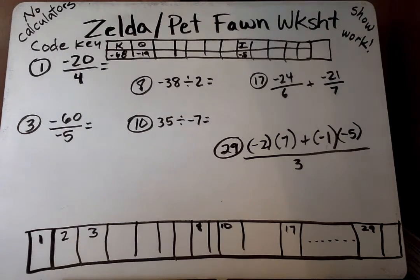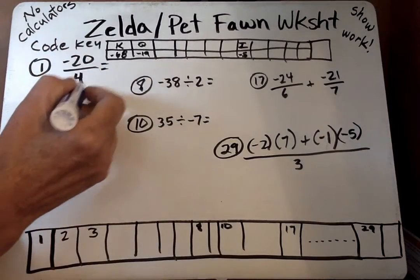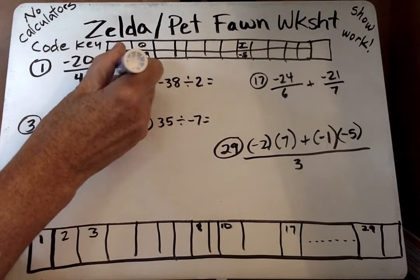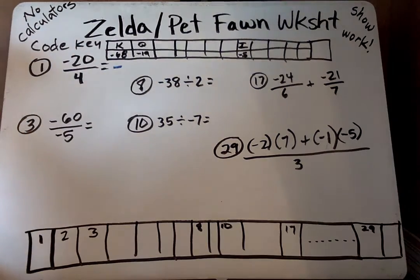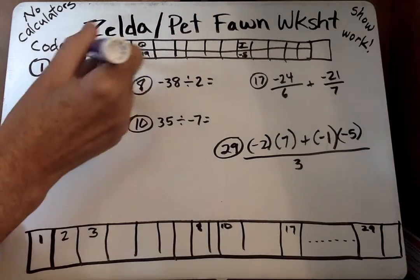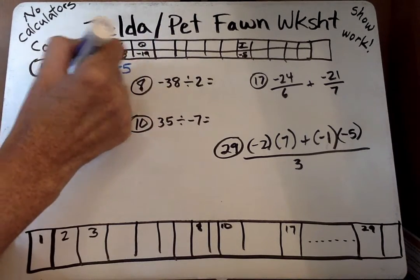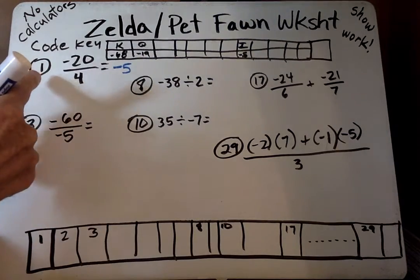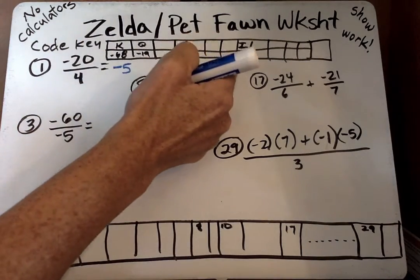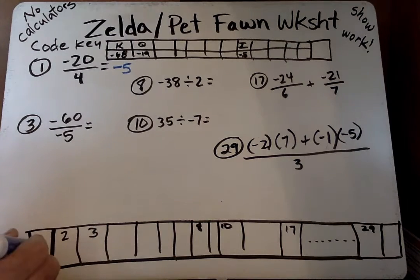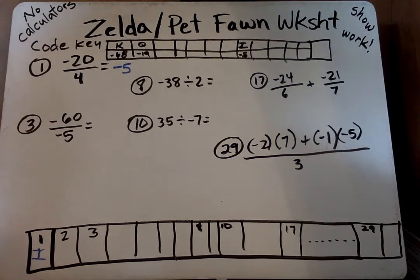So, number 1 is negative 20 divided by 4. A negative divided by a positive is a negative. So it's kind of the same rules as for multiplication. So 20 divided by 4 is 5, negative divided by positive is negative, so it's negative 5. So I look in my code key, negative 5 is i, so we put an i down here under number 1.